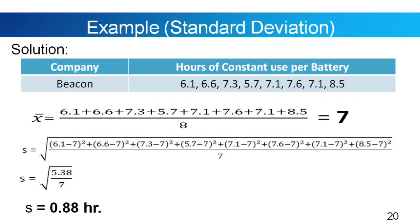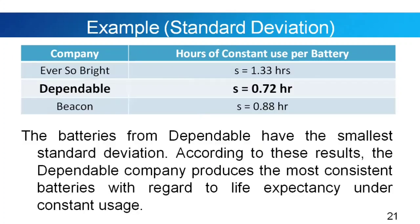Now let's compare the three standard deviations: Ever So Bright is 1.33 hours, Dependable Company is 0.72 hours, and Beacon is 0.88 hours. The batteries from Dependable have the smallest standard deviation. According to these results, the Dependable Company produces the most consistent batteries with regard to life expectancy under constant usage — meaning Dependable Company gives us the best quality product.